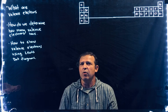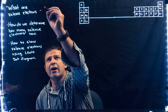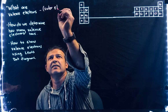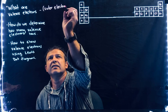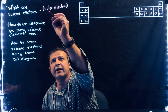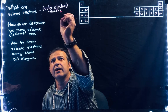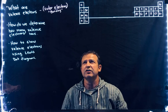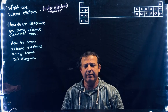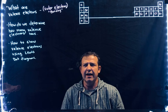The first question: what are valence electrons? We're going to define valence electrons as outer electrons. They're the ones that are going to be involved with bonding. Inner electrons aren't usually involved with the bonding with other atoms. So these are electrons in the outer part of the atom that are going to be exchanged or shared with other atoms.